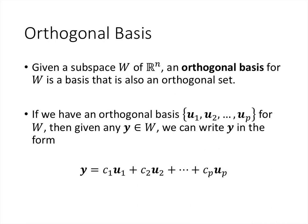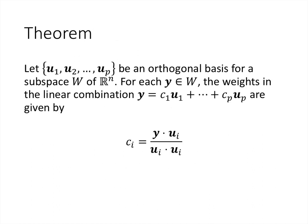When we have an orthogonal basis for a space, any vector in that space can be written as a linear combination of those orthogonal vectors with coefficients c1, c2, ..., cp. The general problem of finding the actual coefficients normally requires solving a matrix equation. But it turns out that when we have an orthogonal basis, finding those coefficients is actually much, much easier.